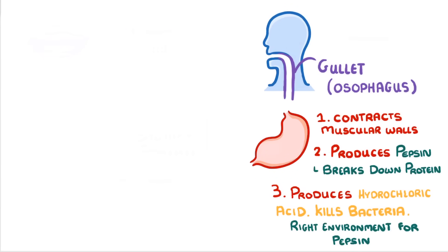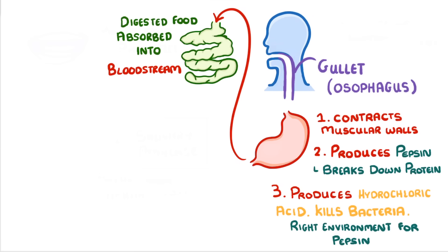After an hour or so in the stomach, the food is squeezed out into the small intestine. The small intestine is where the digested food will be absorbed into the bloodstream, but it's also the place where most of the digestion will take place, and produces digestive enzymes itself to help digestion.